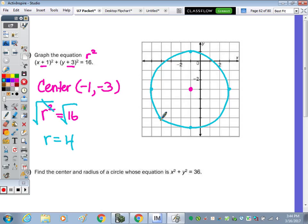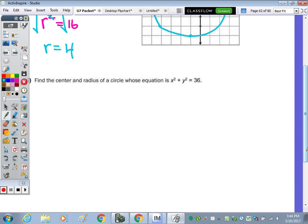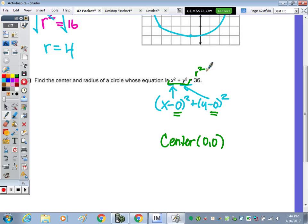And the last one, find the center and the radius of the circle whose equation is this. Now, if there's no plus or minus to the x or y squared, you can look at this as (x - 0)² + (y - 0)². x minus zero is simply just x squared, and y minus zero is simply y squared. So our center is (0, 0). So any time it starts x² + y², your center is going to be right at the origin. And remember, it's equal to r squared. So what number squared is 36? So it's going to be 6² is 36, so your radius is 6.